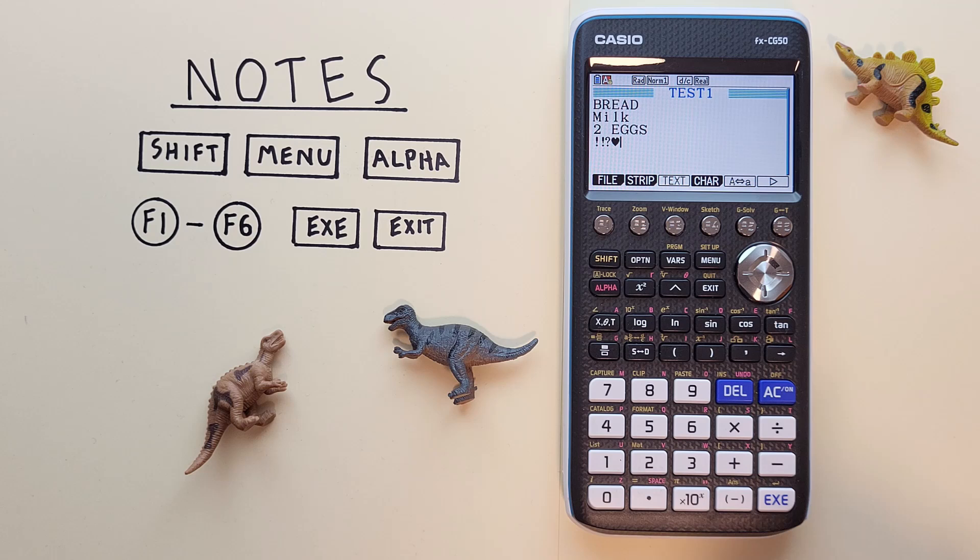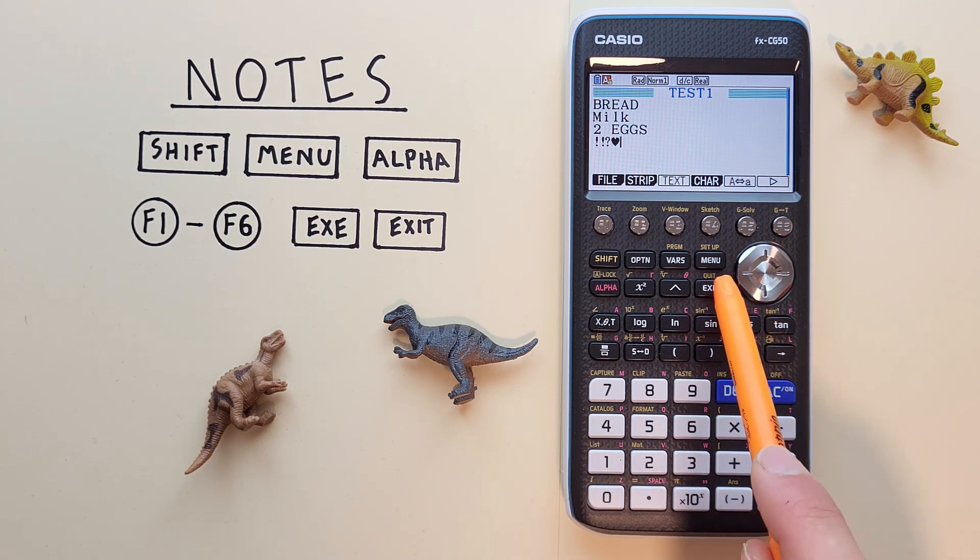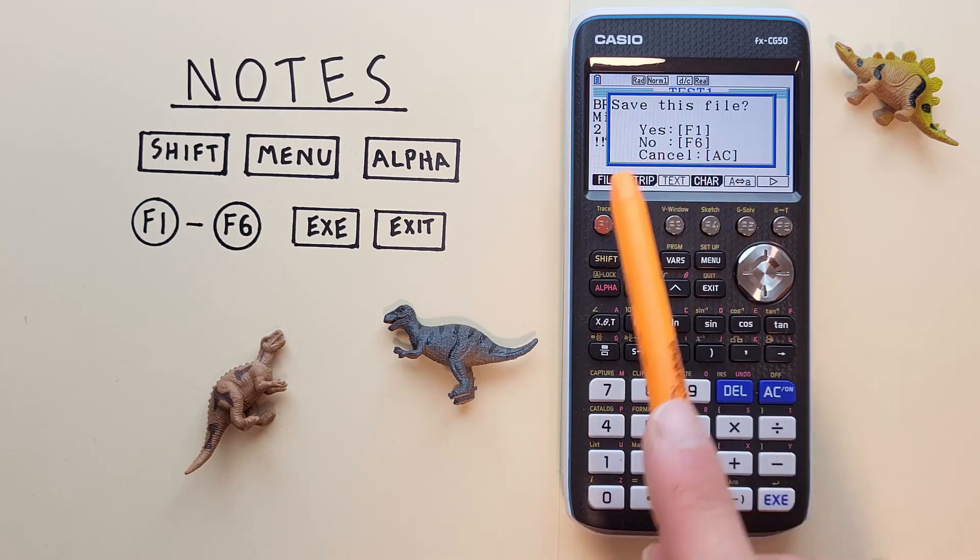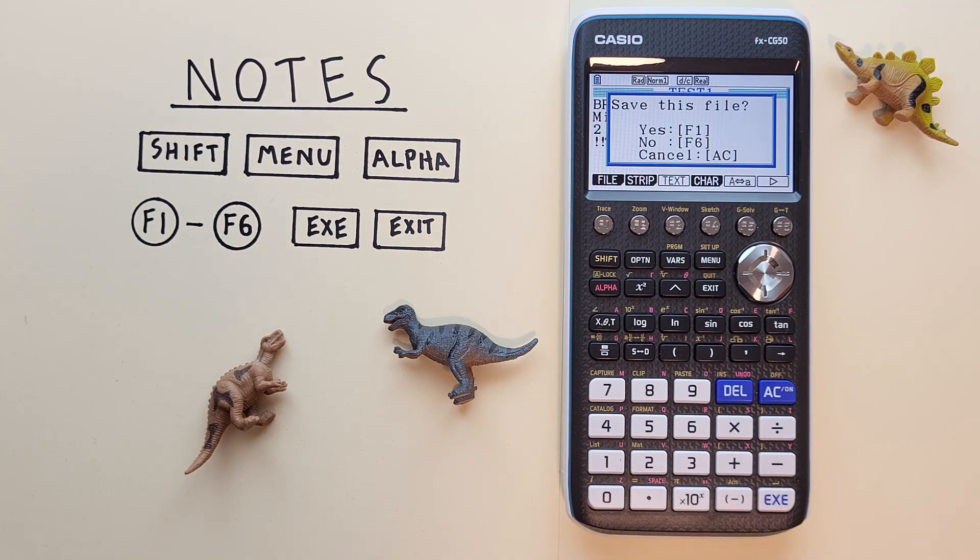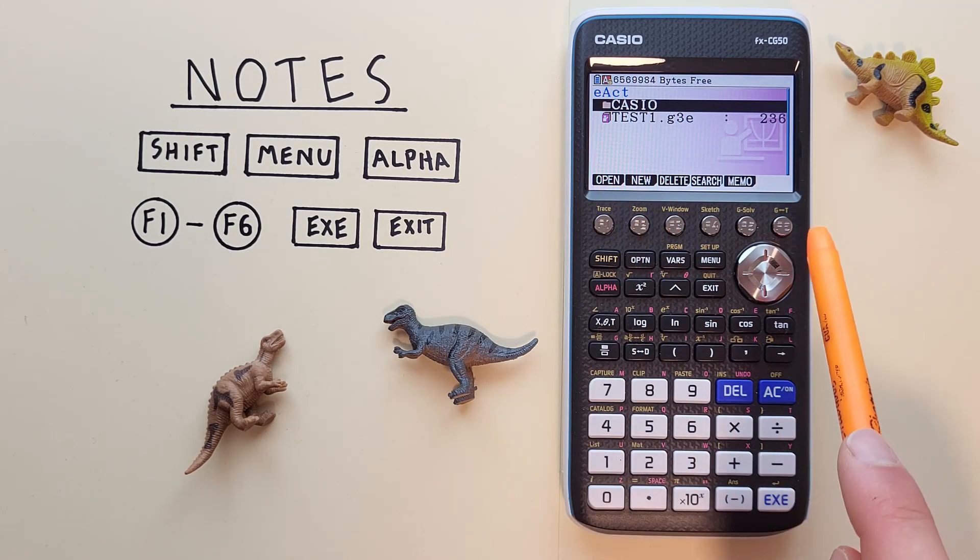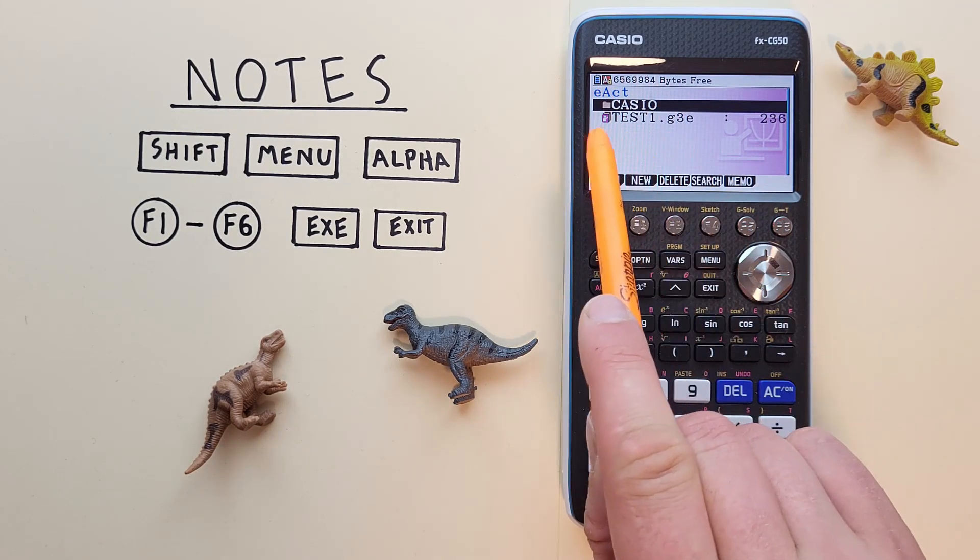Once we're done writing our note, we can finish by hitting the exit key. It'll pop this screen up asking us to save the file. If we want to save it, we hit F1. And there we go. Now we see it appear on our main screen here.